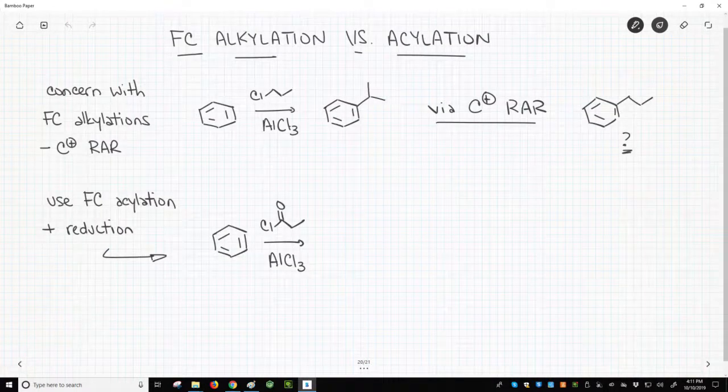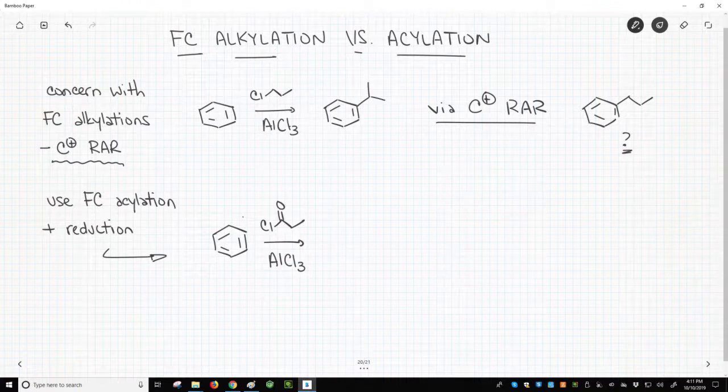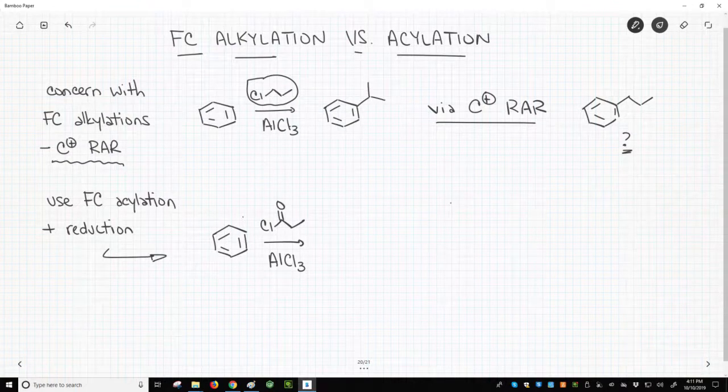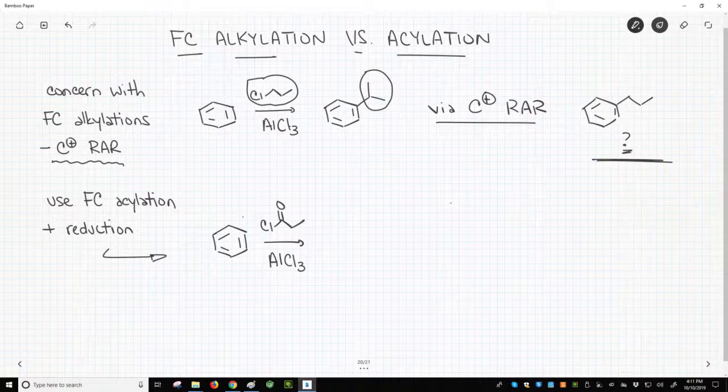At the top of the slide, we have a reminder that the Friedel-Crafts alkylation can involve carbocation rearrangements or hydride shifts. In the case shown, propyl chloride actually gives substitution of an isopropyl group. We've seen this before, but what if we really need to make a benzene ring with a propyl group?